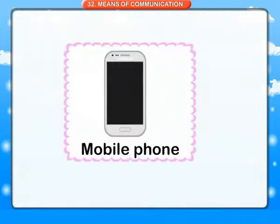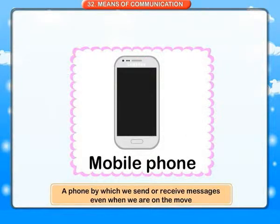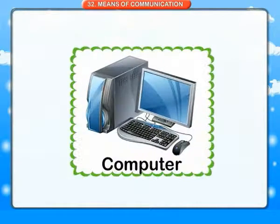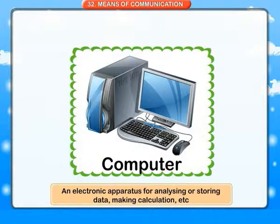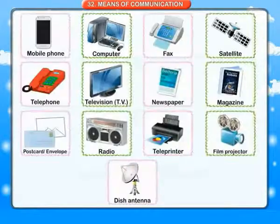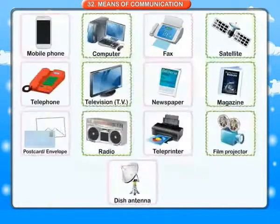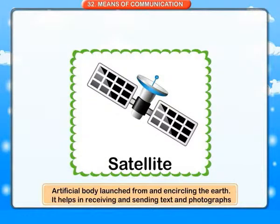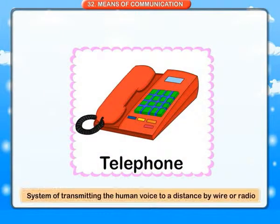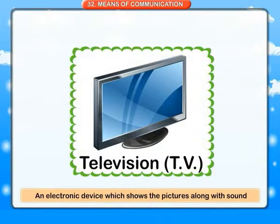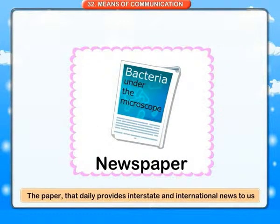Means of communication. Mobile phone: a phone by which we send or receive messages even when we are on the move. Computer: an electronic apparatus for analyzing or storing data, making calculations, etc. Fax: a machine which when attached to a telephone can transmit written text. Satellite: an artificial body launched from and encircling the earth; it helps in receiving and sending texts and photographs. Telephone: a system of transmitting the human voice to a distance by wire or radio. Television or TV: an electronic device which shows a picture along with sound. Newspaper: the paper that daily provides national and international news to us.